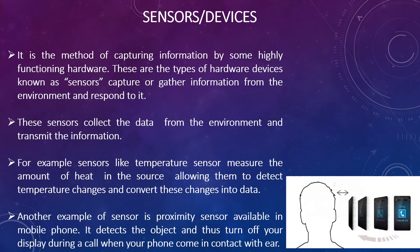These sensors collect data from the environment and transmit information. Just like our tongue collects information about the food we eat and sends it to the brain — whether it is sweet, sour, or salty — sensors collect data and transmit it. For example, a temperature sensor measures the amount of heat in a source, allowing it to detect temperature changes and convert those changes into data. This is how we are able to see weather forecasts or temperature readings on your phone.